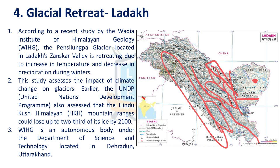Glacial retreat means the fast melting of glaciers leading to depletion of the extent of a glacier. This is observed in all regions because of global warming and climate change. Ladakh is in the third pole region — Karakoram, Himalayas, and Hindu Kush mountains together are called the third pole region. This third pole region is experiencing the negative impact of climate change and global warming, that is, glacial retreat.